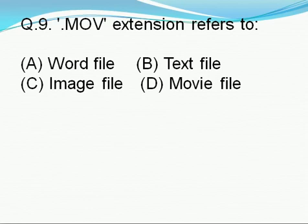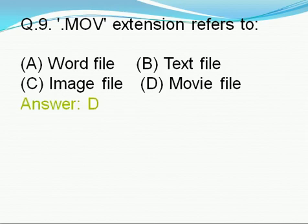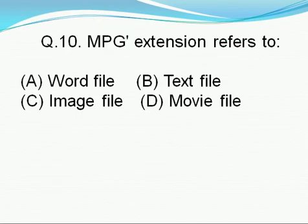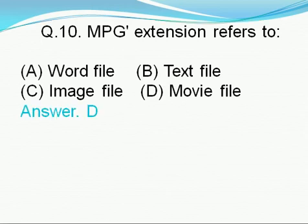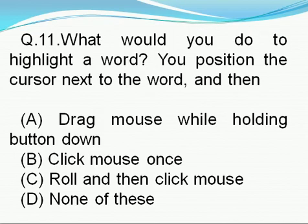Question number 9: MOV extension refers to — option A: word file, option B: text file, option C: image file, option D: movie file. Right answer is D, i.e., movie file. Question number 10: MPG extension refers to — option A: word file, option B: text file, option C: image file, option D: movie file. Right answer is D, i.e., movie file.